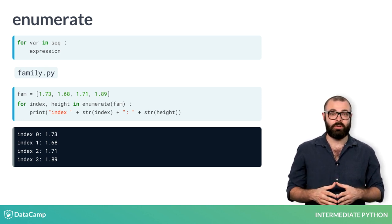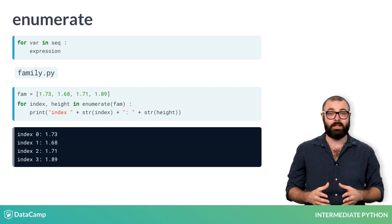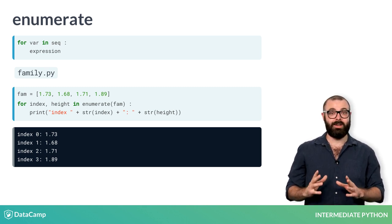Now on each iteration, index will contain the index, and height will contain the float. This means that we can now also update the statement inside the for loop with a more complicated print call. Notice that I had to convert the floats to strings with str, so that you can add everything together. The printouts are exactly what we wanted. Nice!